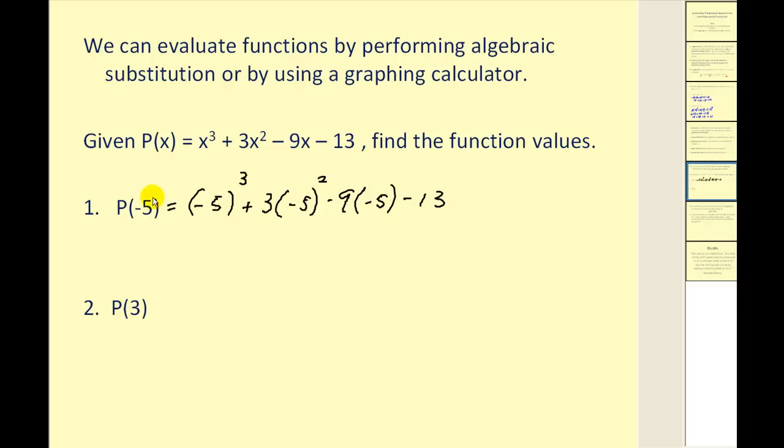Now we need to simplify this. -5³ would equal -125. -5² would equal positive 25 times 3, that would be 75. -9 times -5 would be plus 45, and then minus 13. If we simplify all of this, we should obtain -18. So in conclusion, P(-5) = -18. Now I want to make the connection that this actually represents a point on this function, and that point would be when x = -5, y = -18. If we graph this function, this point would be on the graph.